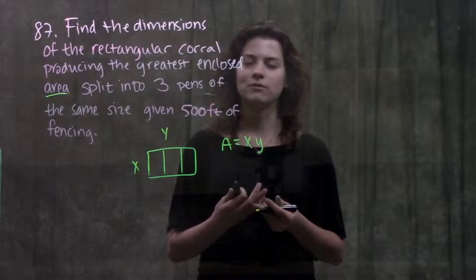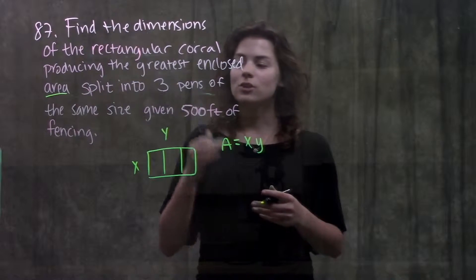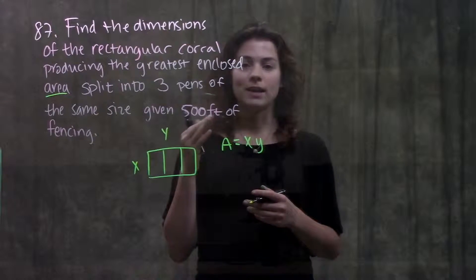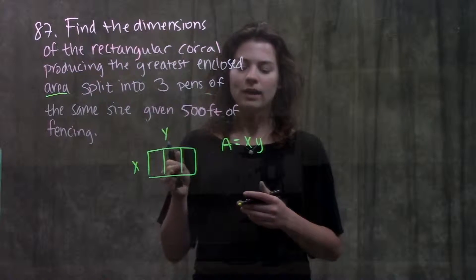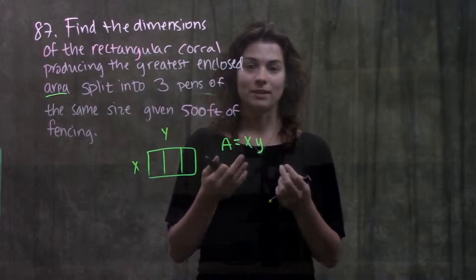Alright but what I have here so far I'm not able to solve for anything I have too many unknowns. So let's go back to the word problem and see if we can find another relationship between x and y so that maybe I can solve for one variable plug it into this function and then solve for the other one.